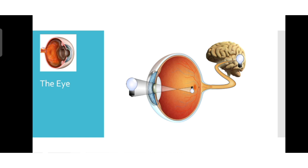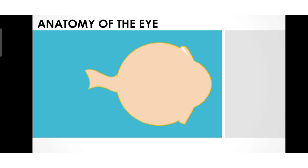So let's move on to the different structures present in the eye. This is the eyeball. Here we have the superior rectus muscle, which is one of the extraocular muscles. It helps in elevation — meaning the eye moves upward when we want to see towards the top. The superior rectus muscle also contributes to adduction, which means movement of the eye towards the nose.